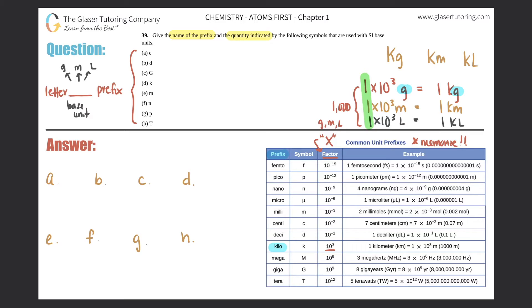For this problem, they want you to name the prefix and the quantity indicated. Starting with lowercase c—lowercase c is centi. For a, that is centi, and centi is always known to be 10⁻². Let's put that number into non-exponential form for practice.